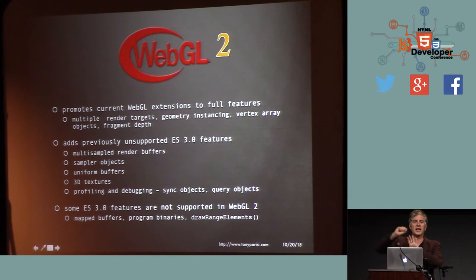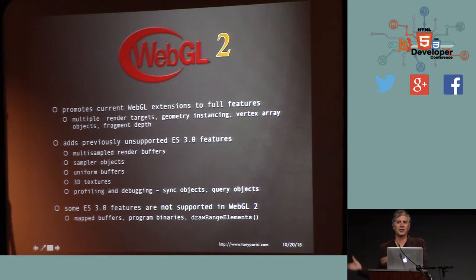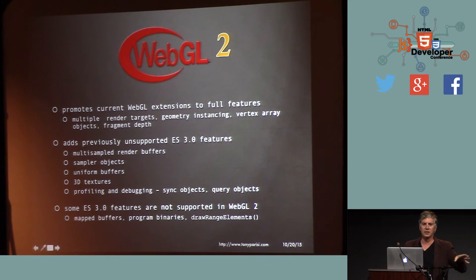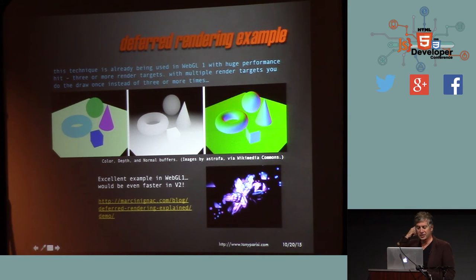Some other ES3 additions: multi-sampled render buffers. If you're rendering to off-screen buffers you'd normally lose hardware anti-aliasing — anti-aliased drawing is handled for you in hardware if you go straight to the back buffer. But if you use off-screen render targets for post-processing effects like bloom or glow, you lose hardware anti-aliasing support. You'd have to write a shader doing Gaussian blurs over the entire texture in software. Now there's hardware assist for multi-sampling in those render buffers, reducing the number of draw calls and the number of times you send a texture to the GPU.